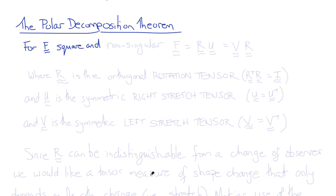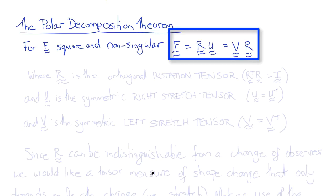it can always be decomposed into the product of R, an orthogonal rotation, and U, a symmetric tensor. Or, alternatively, the product of the symmetric tensor V times R, the orthogonal rotation.